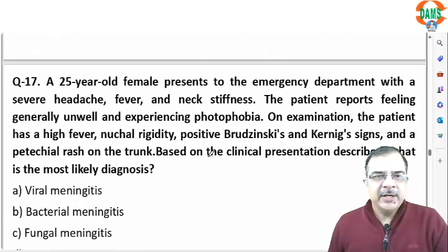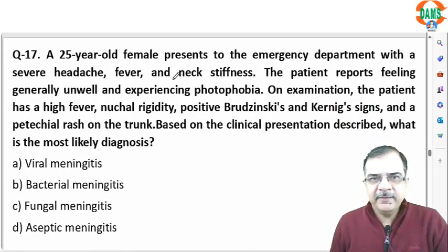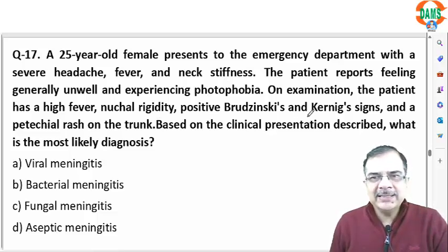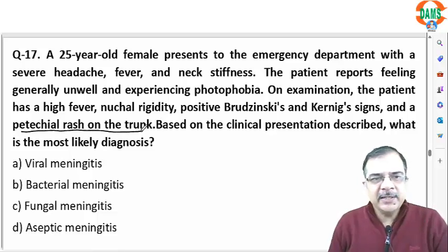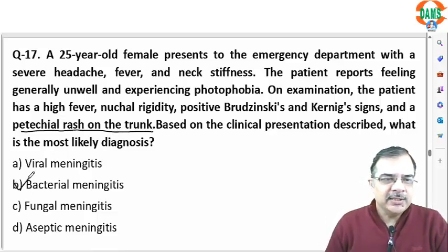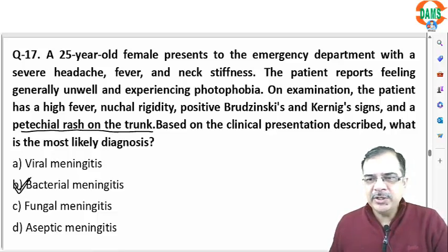Question 17: a patient presents with severe headache, fever, and neck stiffness — this is meningitis. The patient also has photophobia, neck rigidity, positive Brudzinski sign, and positive Kernig sign. Petechial rashes are present on the trunk, which clinches the diagnosis as meningococcal meningitis — a case of bacterial meningitis.